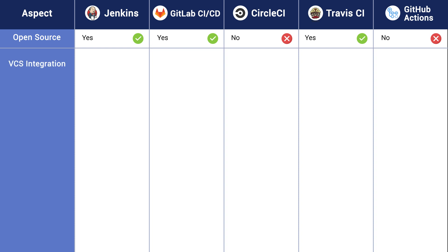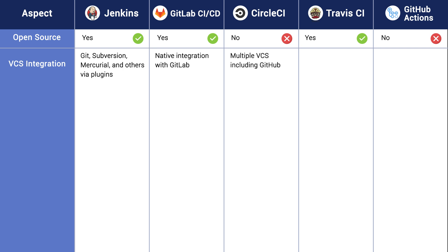What about the VCS integrations? Jenkins has Git, Subversion, Mercurial, and others via plugins. GitLab CI/CD has native integration with GitLab. CircleCI has multiple VCSs, including GitHub. Travis CI has a strong integration with GitHub, and GitHub Actions has a seamless integration with GitHub repositories.